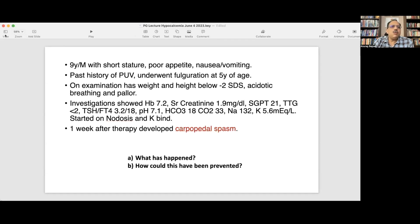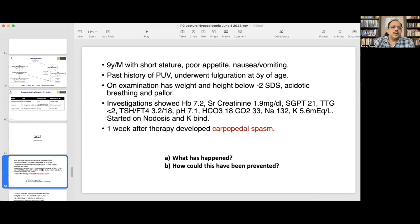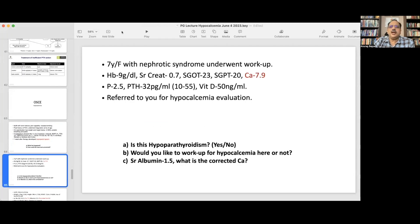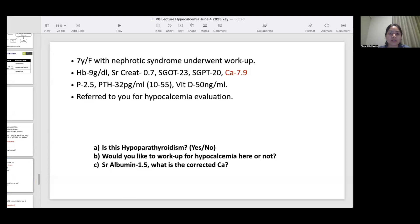Moving to the next case, we have a seven-year-old girl, a case of nephrotic syndrome. She underwent a routine panel of workup and on investigation she was found to have calcium of 7.9. The doctor went ahead and did phosphorus, PTH, vitamin D levels. Phosphorus was normal, PTH was 32 in the normal range, vitamin D was in the adequate levels. The child was referred to you for hypocalcemia investigation. In the presence of low calcium, this normal PTH, do you think this is hyperparathyroidism?